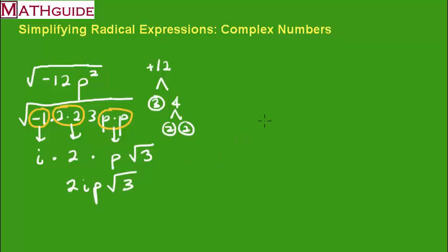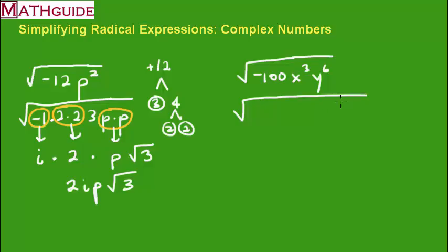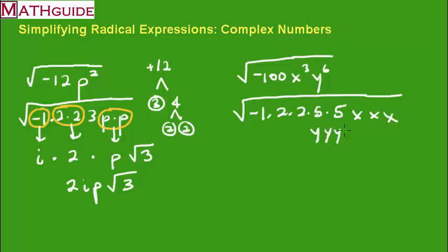Let's take a look at another example. For negative 100x³y⁶, the factor tree gives: negative 1, then 2 times 2 times 5 times 5 for 100. x cubed is x, x, x. And y to the sixth is six y's — all underneath the radical sign. Let's take the square root.